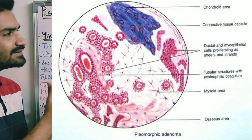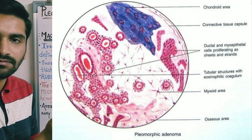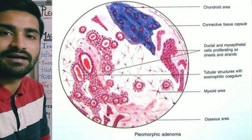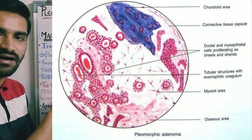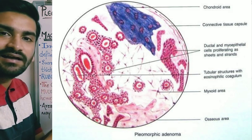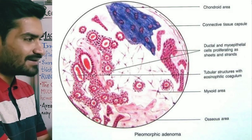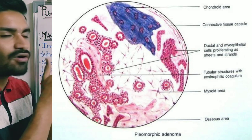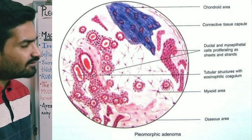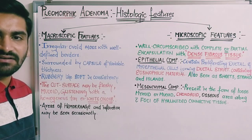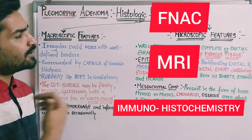In summary, the histological features of pleomorphic adenoma include five key structures: ductal structures containing eosinophilic material; non-ductal structures in the form of sheets, strands, and islands; and the mesenchymal component in the form of myxoid material and hyalinized connective tissue. For investigations, FNAC, MRI, or immunohistochemistry can be used to confirm the diagnosis.